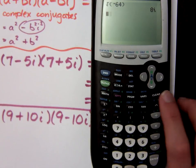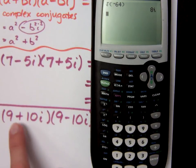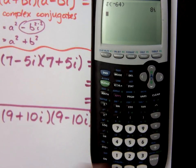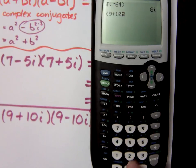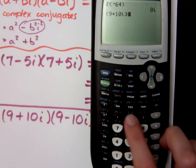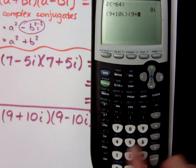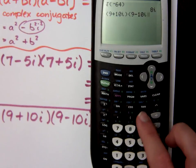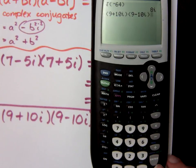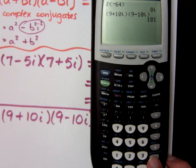So that means if I want to type in this expression that we just worked on: 9 plus 10i — second decimal to get your i — times 9 minus 10i. That gives you 181.